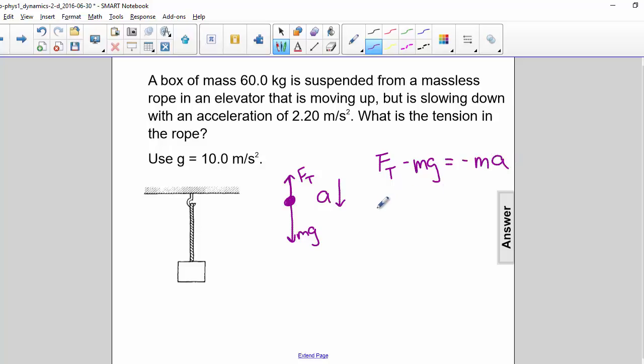Therefore Ft is equal to mg minus ma. You can factor out the m, so it is m times g minus a.